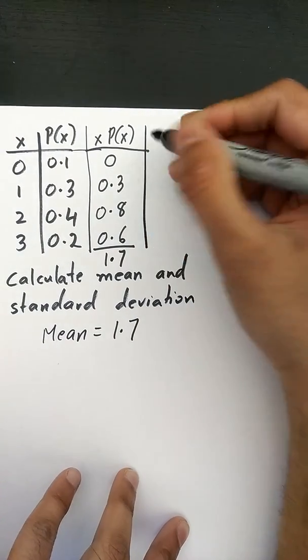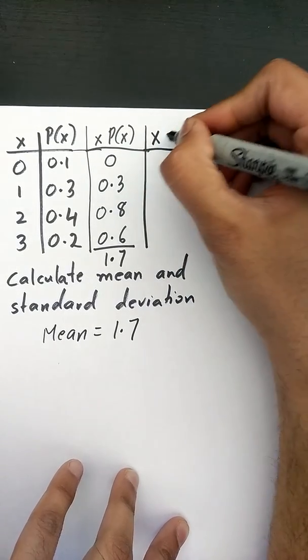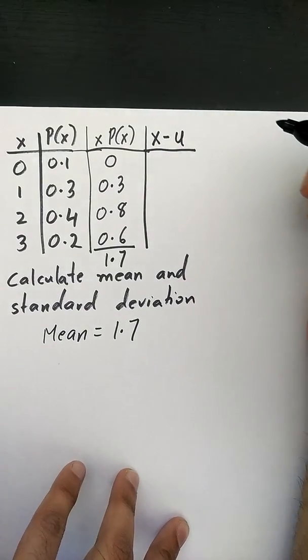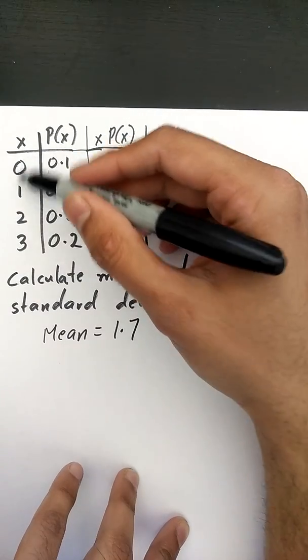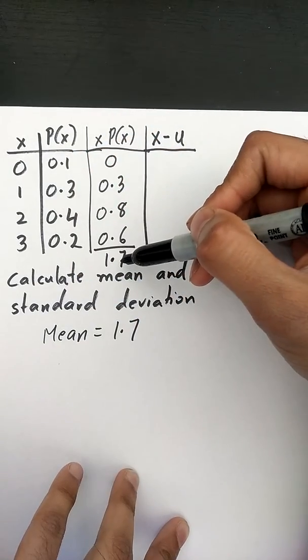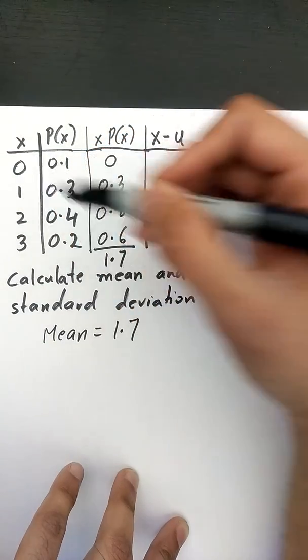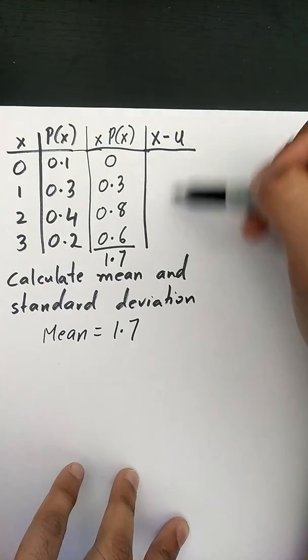We're going to add a new column and this new column is basically called x minus your mean. Now my x values are right here and my mean is 1.7, so I'm going to subtract each of them from 1.7 to get this column here.